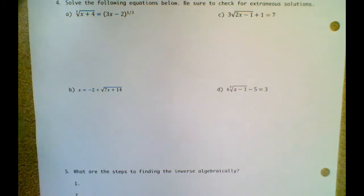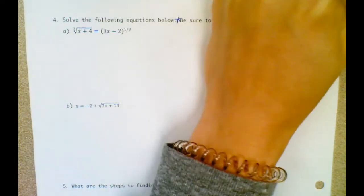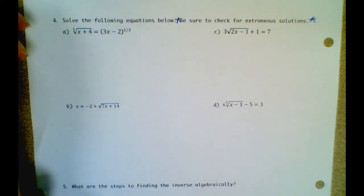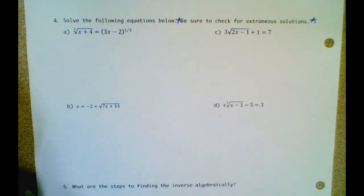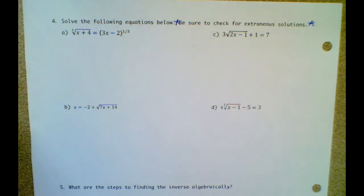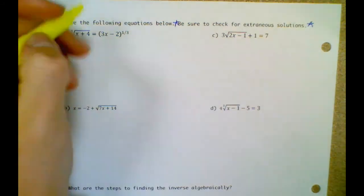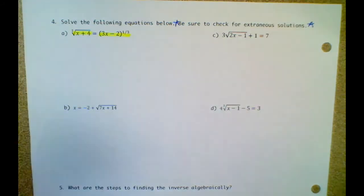On the back side: solve the following equations below. Be sure to check for extraneous solutions — this is a big key part of this. So remember, the first step is to isolate the radical. It looks like I have the radical by itself on one side of the equal sign. Here's my radical; it's already by itself. And I have a radical over here by itself.